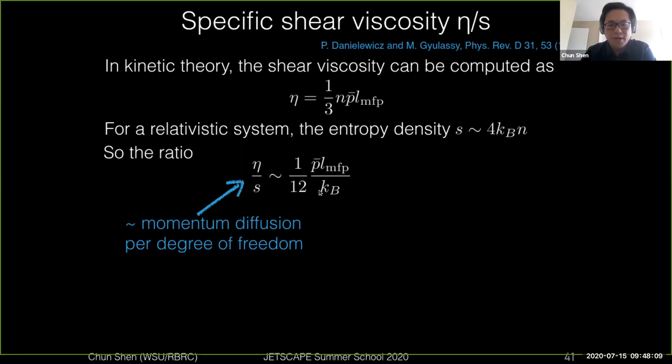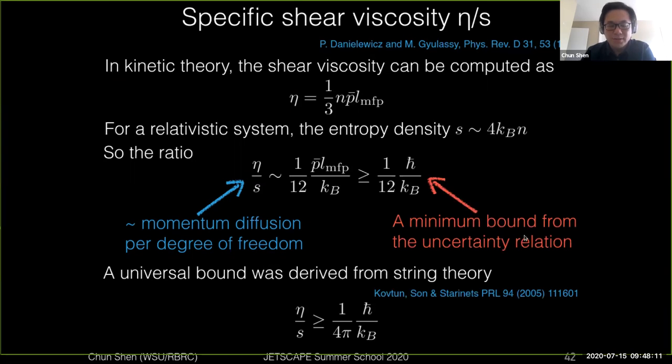If we further use the uncertainty relations to basically say that the mean momentum of the particles times the mean free path needs to be on the order of h-bar and much larger, from the uncertainty relation constraints, you reach a limit of the shear viscosity to entropy ratio of about one over twelve in units of h-bar over kb.